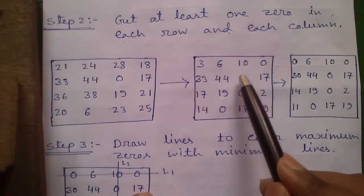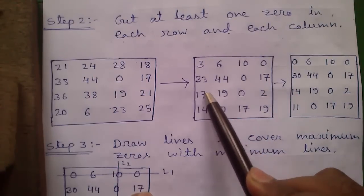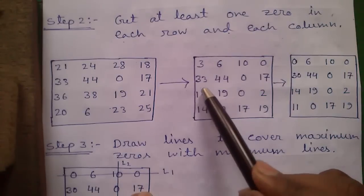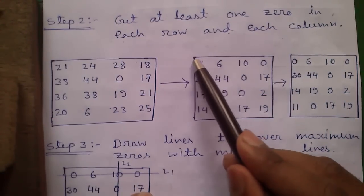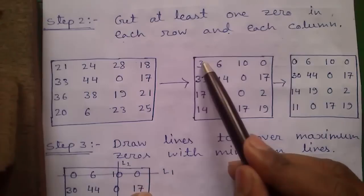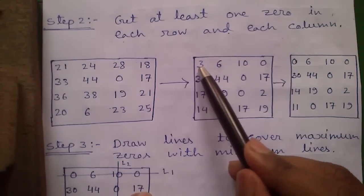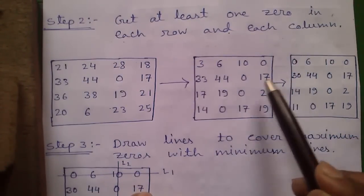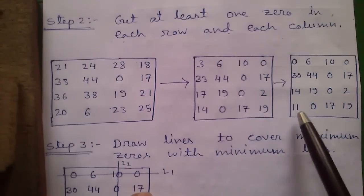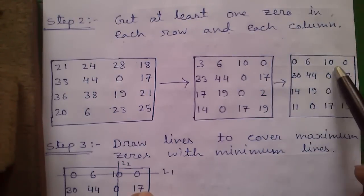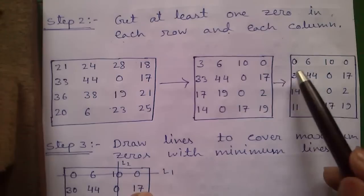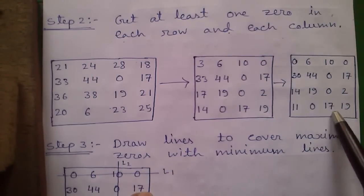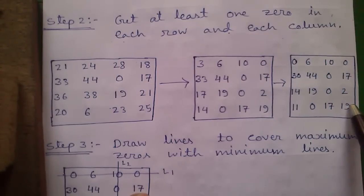So perform the row operations on each of the rows. And now we will scan for columns. In column 1 there is not any zero, so we will perform the same operation. The smallest number is 3, subtract 3 from all the elements. So now we have this matrix where we have at least one zero in each row and each column. We can proceed to our next step.